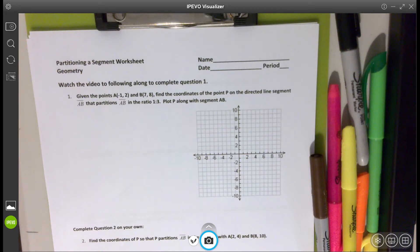All right, so today we're going to talk about partitioning a directed line segment, or sometimes they call it a partitioning segment. I'm going to start by actually just drawing out the segment that they want. So in number one, they're given points A and B, and I'm going to plot those first.